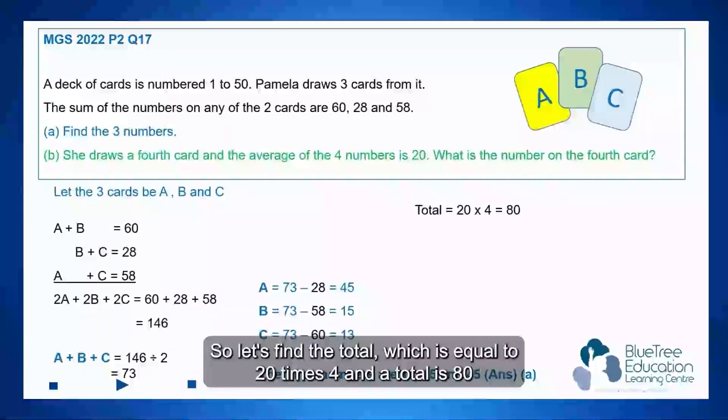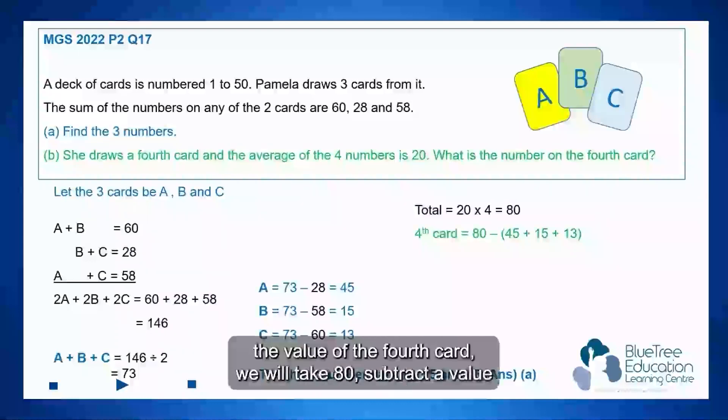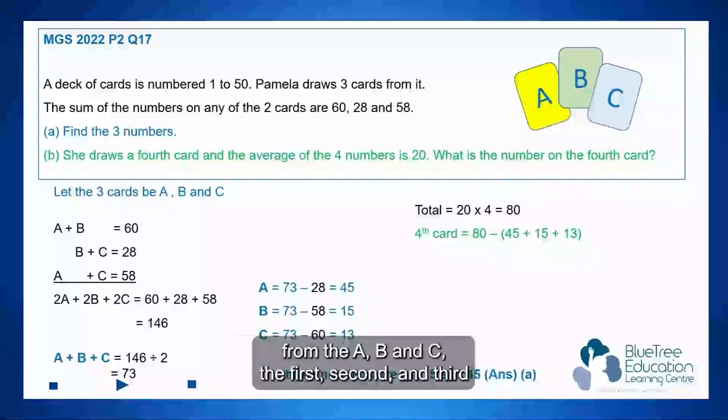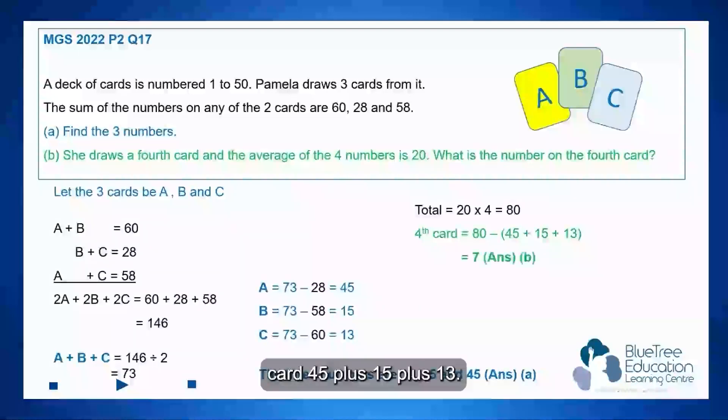So let's find the total which is equal to 20 times 4 and the total is 80. And to find the value of the fourth card, we will take 80, subtract the value from the A, B and C, the first, second and third card, 45 plus 15 plus 13. So this will give you an answer of 7. Did you manage to solve this question?